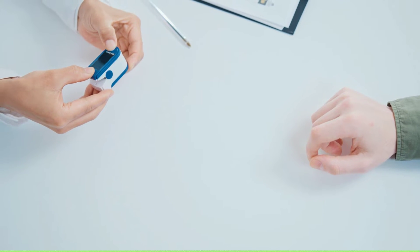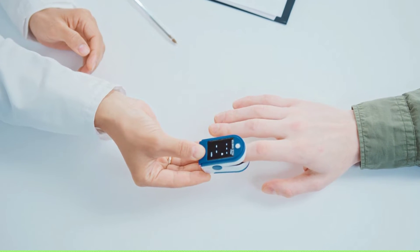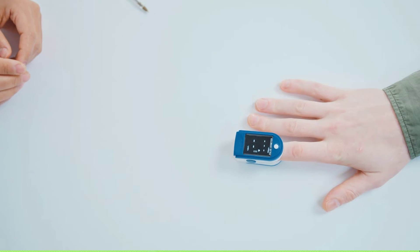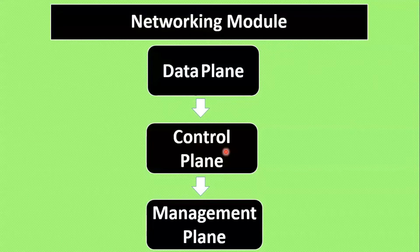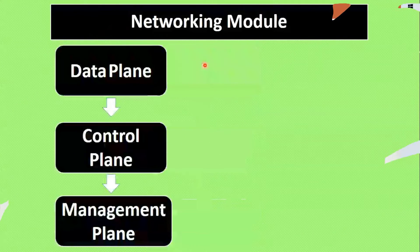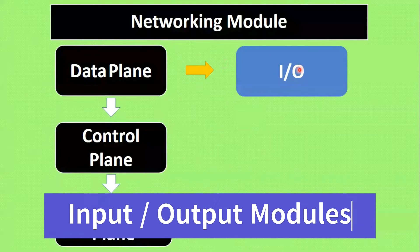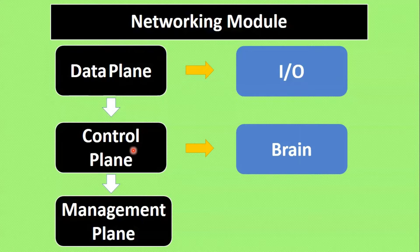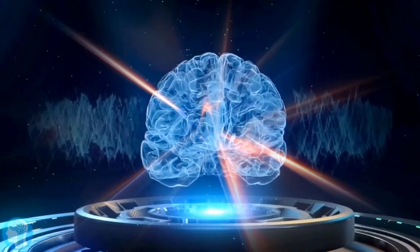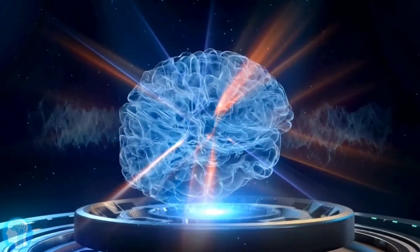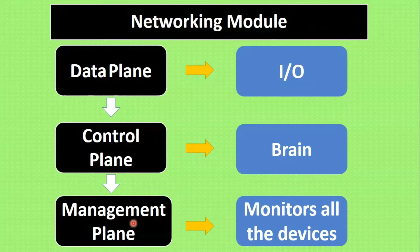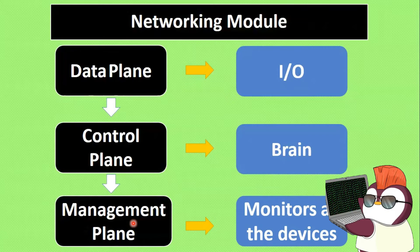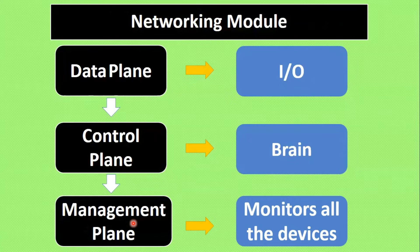Coming to the management plane — if we are not feeling well or we are sick, we go to the hospital. The doctor will do tests and give a prescription or medicines. In the same way, the management plane does health checkups for all devices and provides fixes. Data plane is responsible for forwarding or receiving traffic from the I/O model. Control plane is responsible for making the decision on how traffic should be forwarded or routed. We can say the control plane is the brain of the switches or routers. Management plane is responsible for monitoring all device health, such as whether devices are live on the network or have CPU issues.